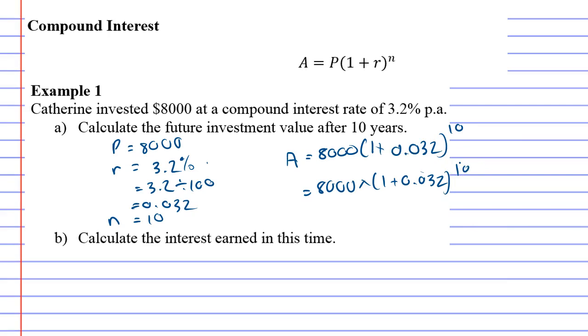Let's get our calculator: 8,000 times 1 plus 0.032 to the power of 10.